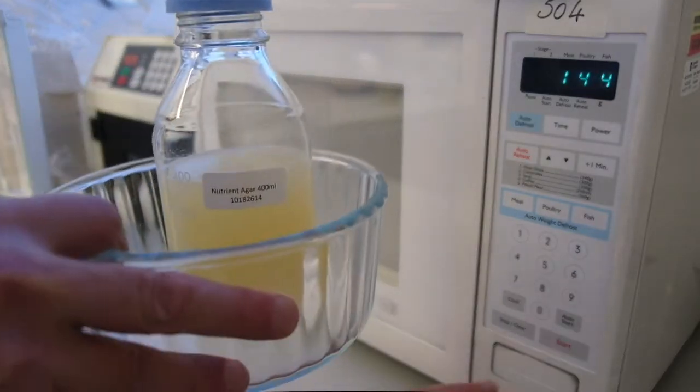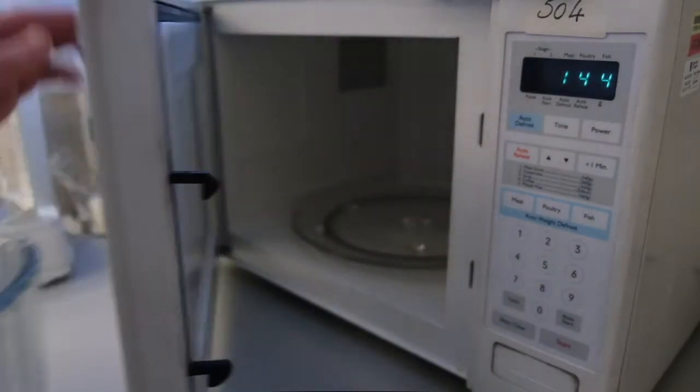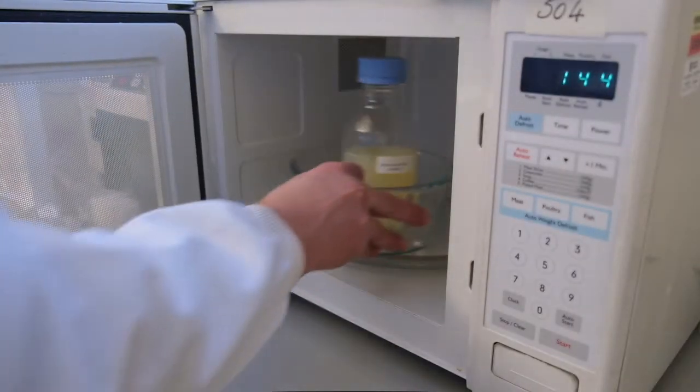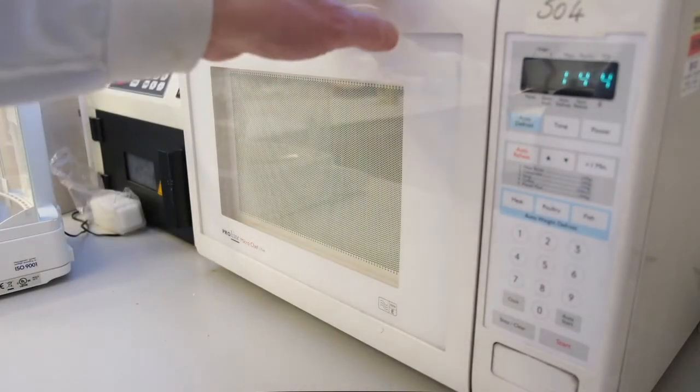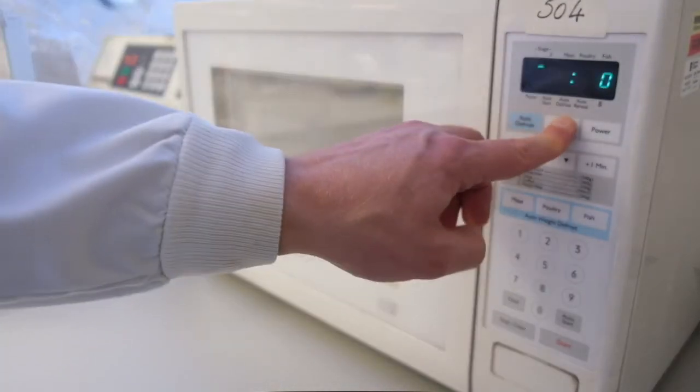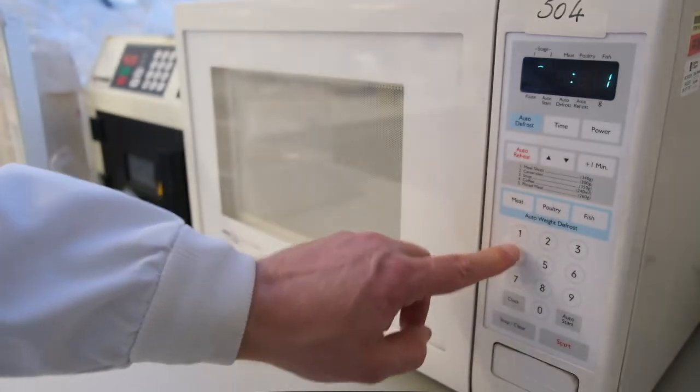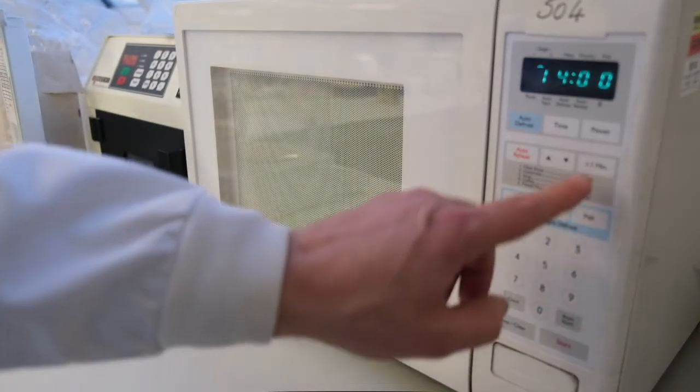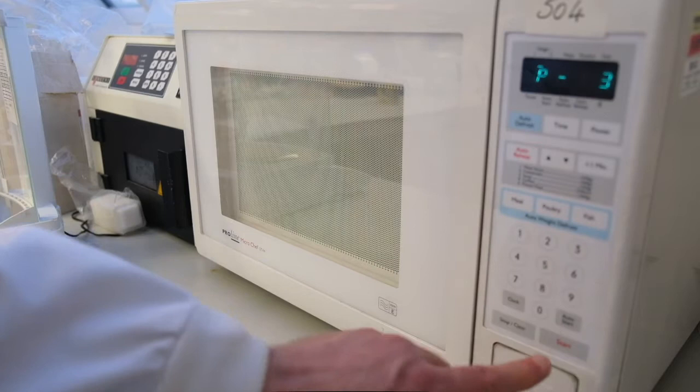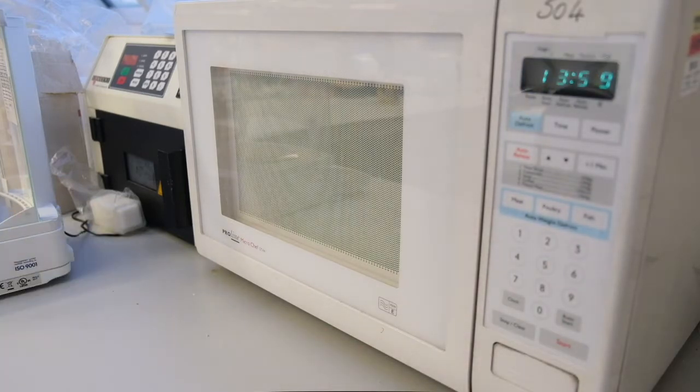We can now place the bottle in the microwave. The glass tray catches any spills. We set the microwave for 14 minutes at 30% of full power. Do not use a higher power or the agar might boil over.